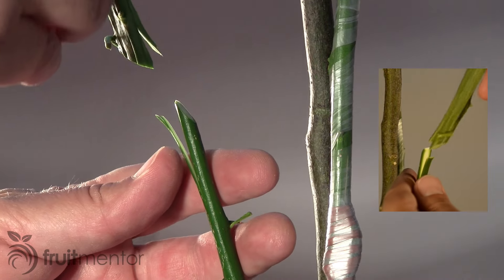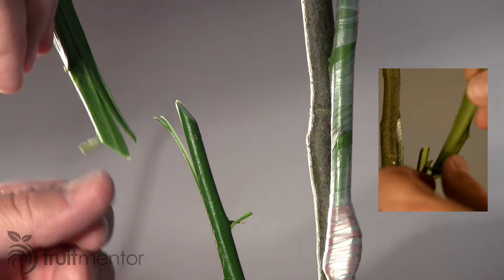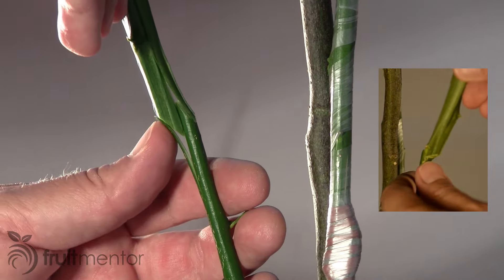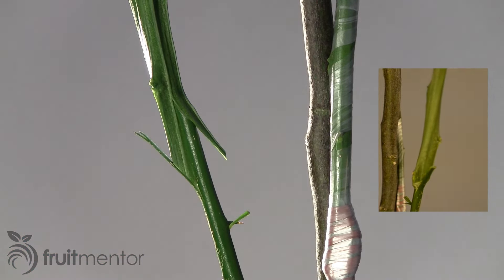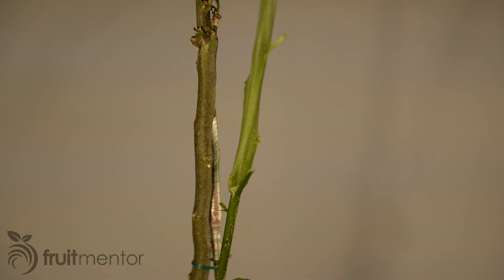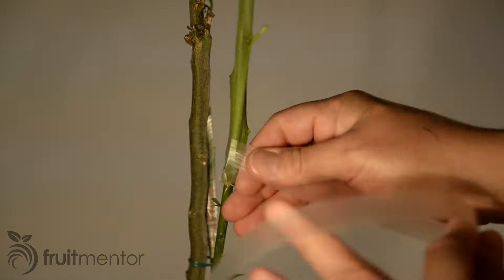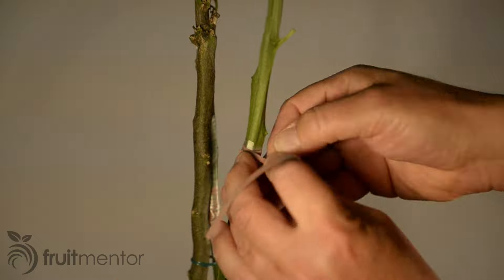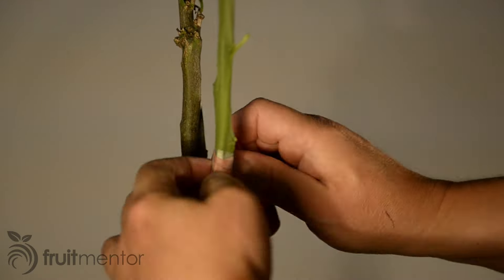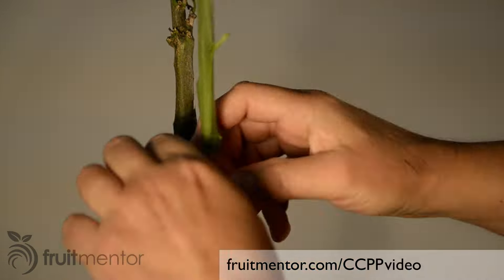Hobbyists in California now instead order their budwood at a nominal cost from the Citrus Clonal Protection Program or CCPP, a program that exists to provide disease-free budwood for the grafting of citrus trees. I've made a video that shows how to set up an account and order citrus budwood. You can click here or visit the link below.